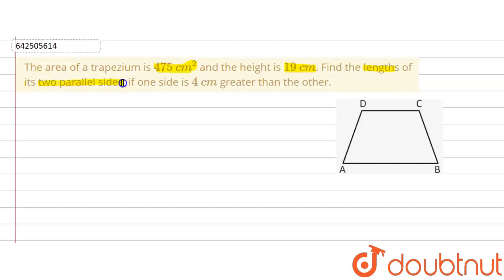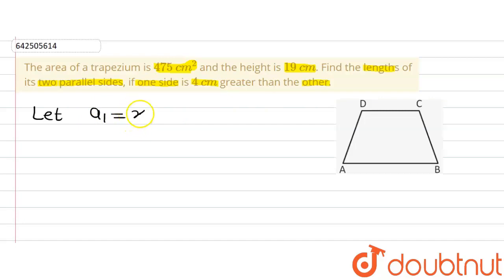The question further says to find the lengths of its two parallel sides. We are not given the two parallel sides directly, but we are given a relation that one parallel side is 4 centimeter greater than the other. Let us assume one parallel side to be x, denoting it a1, and the other parallel side a2 will be x plus 4.